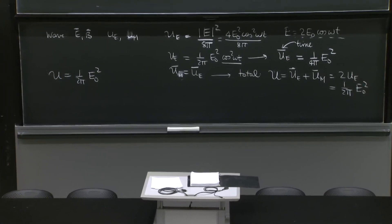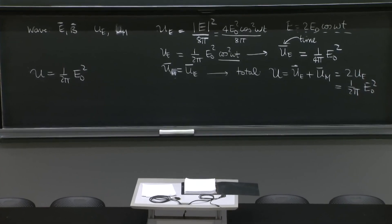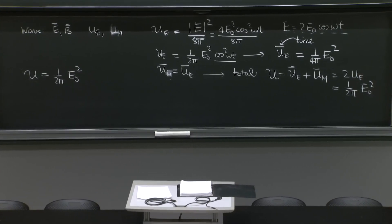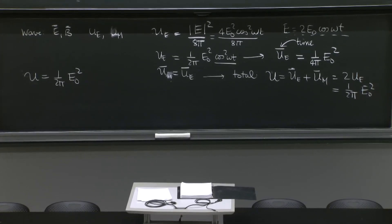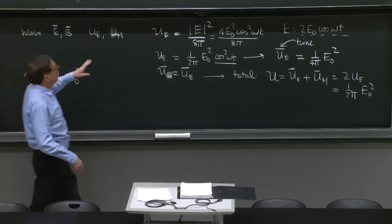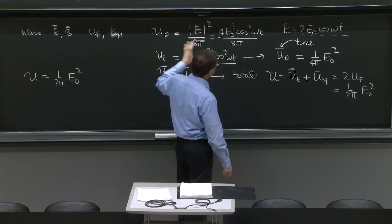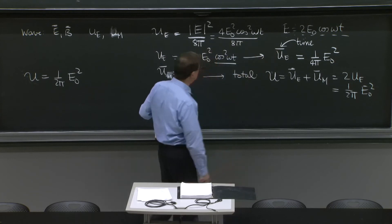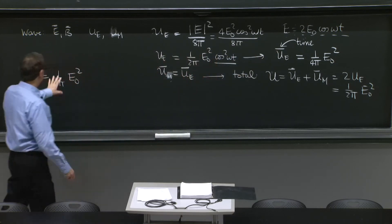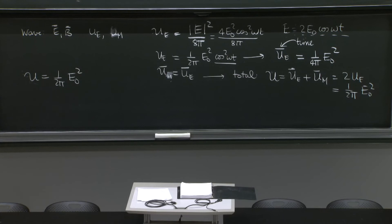The thing here that is important is that there's lots of factors of 2. There's factors of 2 in defining the energy density, in averaging over time, in adding electric and magnetic contributions. This is correct. It's important to get those factors of 2 right. Otherwise, your final formulas will be off.